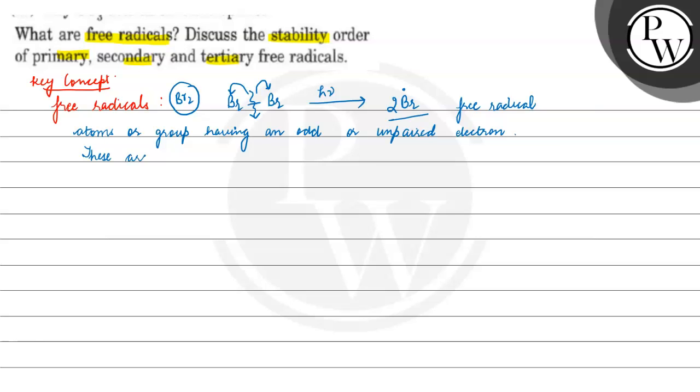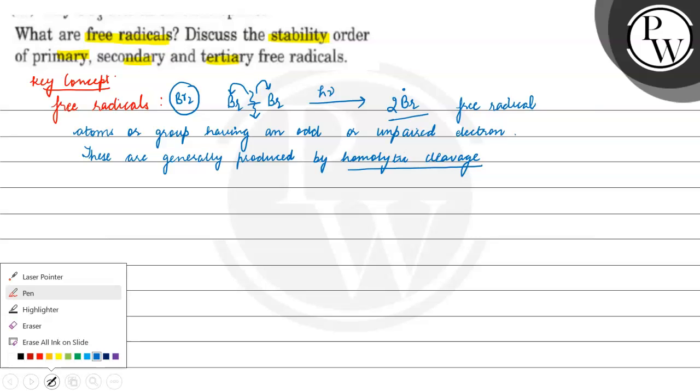These are generally produced by homolytic cleavage.